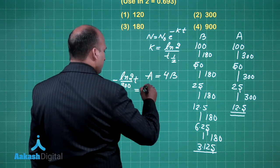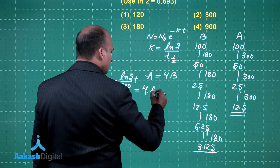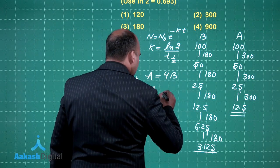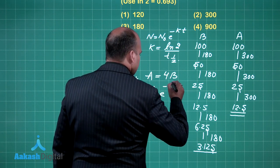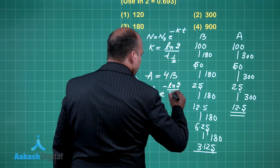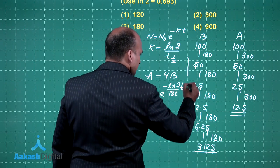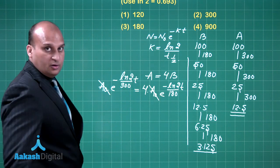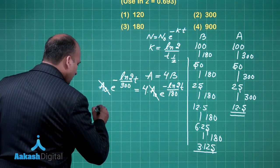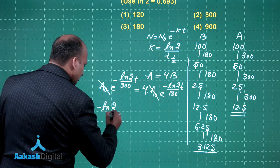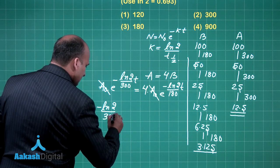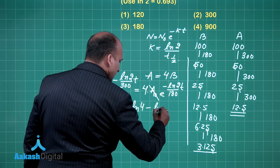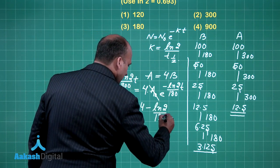Now this is equal to 4 times of A naught, because the initial amount is same. So for B, I am taking the initial amount to be A naught only, e raise to power minus ln of 2 by 180 into T. Now see A naught goes by A naught, now what I will do, take the log on both the sides, so this will be minus ln of 2 by 300 T, this is equal to ln of 4 minus ln of 2 by 180 T.